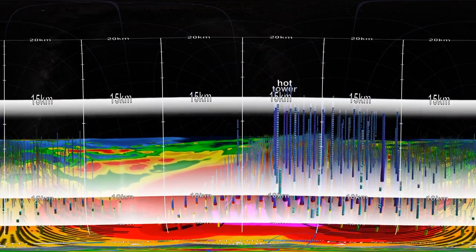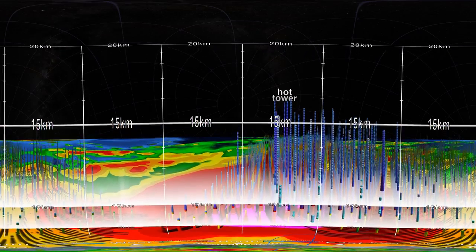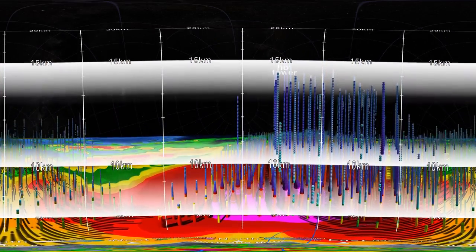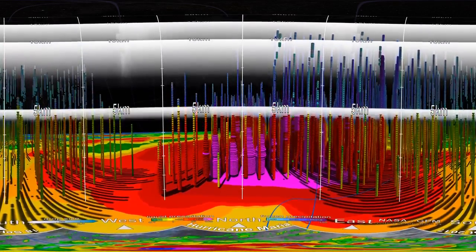Here's another hot tower that's about 17 kilometres tall. Hot towers often appear near the eye wall, a ring of heavy wind and rainfall surrounding the centre of the storm.